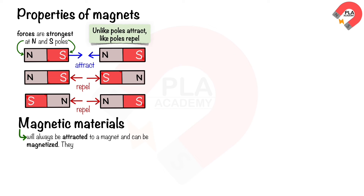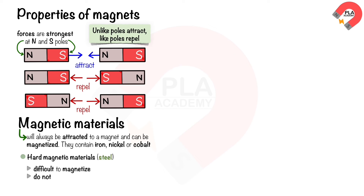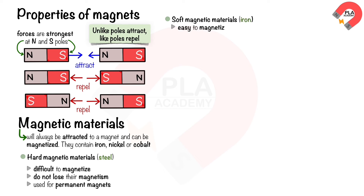Magnetic materials contain iron, nickel, or cobalt. For example, steel is mainly iron. There are two types of magnetic materials. Hard magnetic materials such as steel are difficult to magnetize but do not readily lose their magnetism. They are used for permanent magnets.